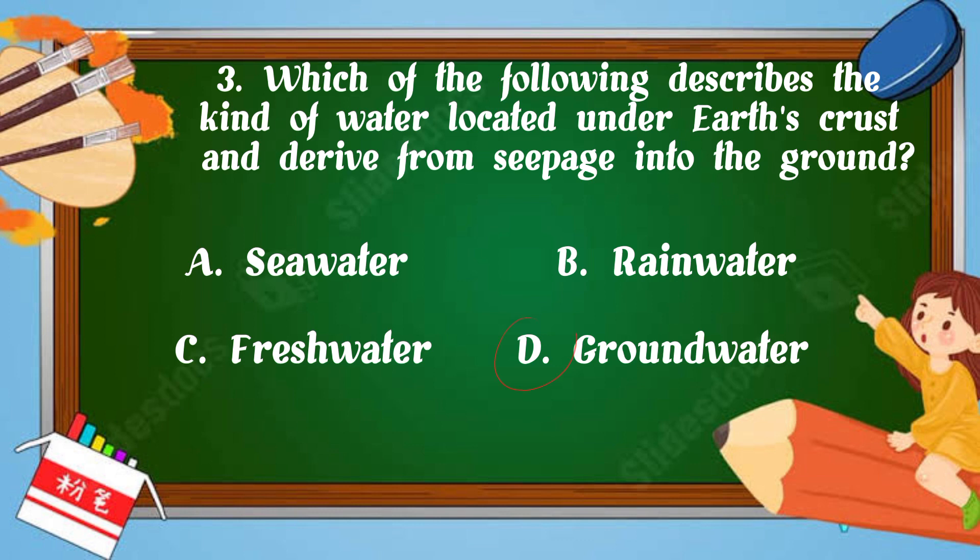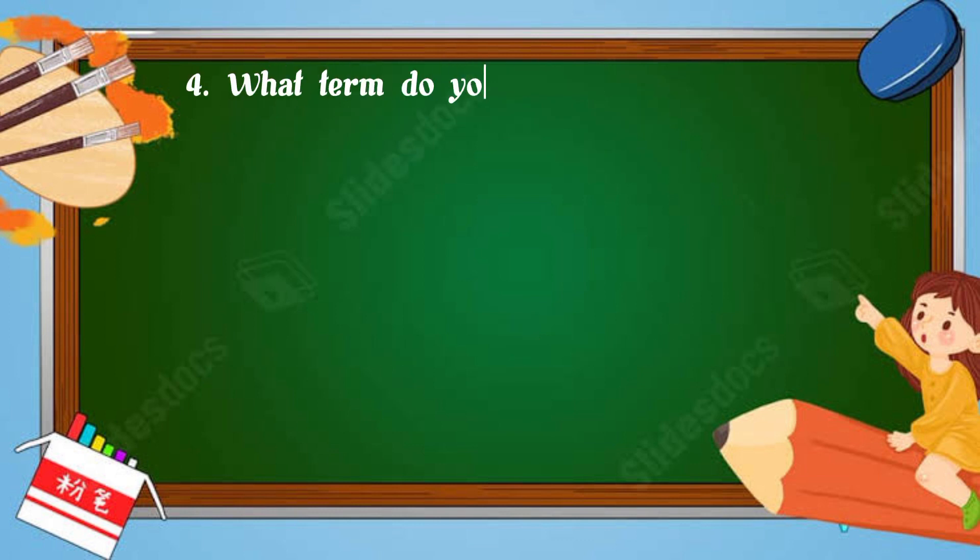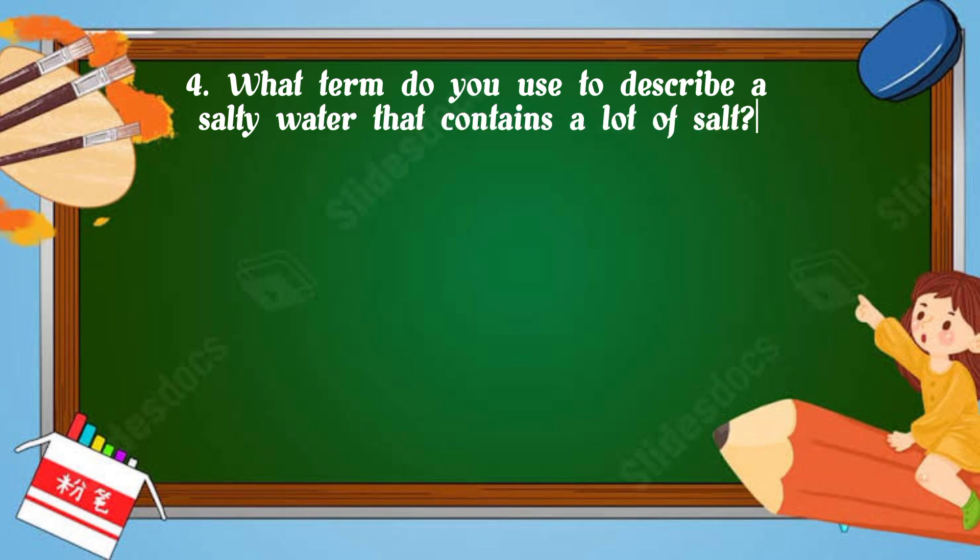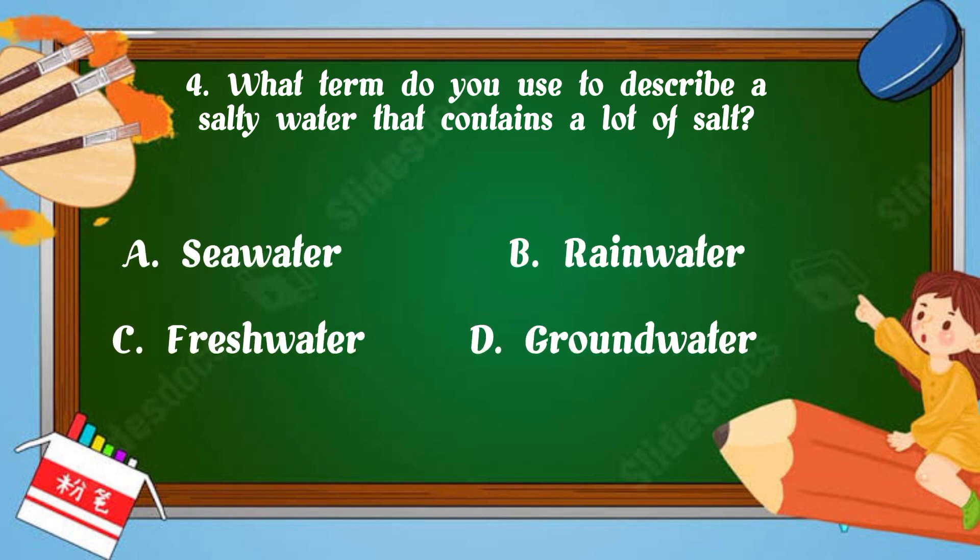Number 4: What term do you use to describe a salty water that contains a lot of salt? A. Seawater, B. Rainwater, C. Freshwater, D. Groundwater. Your timer starts now. The correct answer is seawater.